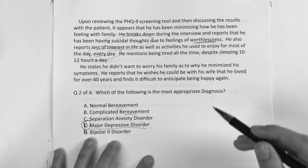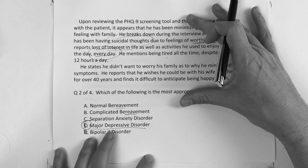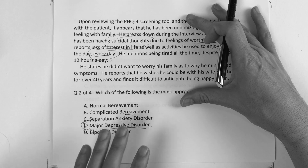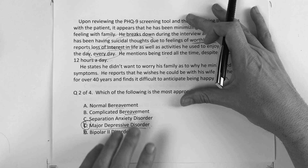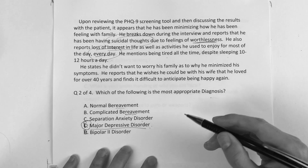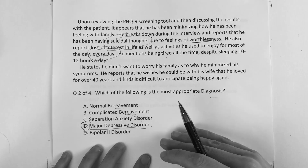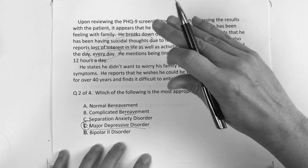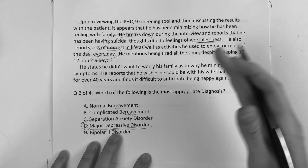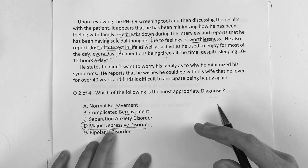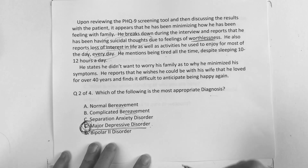Now, is he grieving over the loss of his wife? Yes. But what they changed in the DSM is: for complicated bereavement, they said they need to study that further because they didn't want to lessen the fact that someone like this guy is struggling enough to where he needs to be treated as though it is a major depression. It doesn't matter the time per se, because he has intense feelings and thoughts of wanting to harm himself. So the correct answer is going to be major depressive disorder.